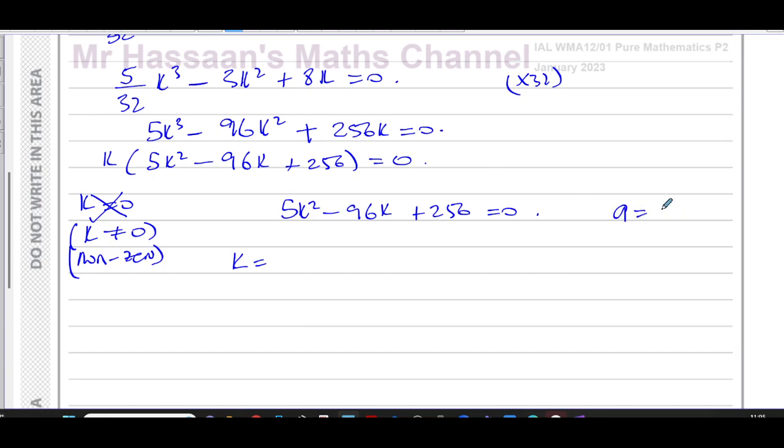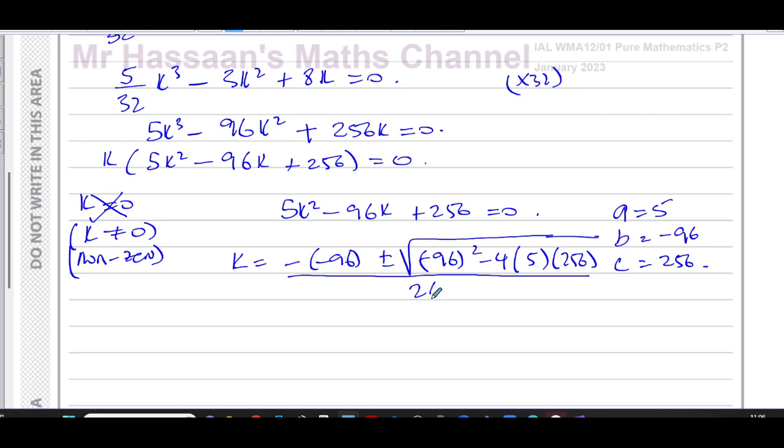So we know that the first term here, a, the one associated with the k squared is 5, and the b, which is associated with the k term, which isn't squared, is minus 96, and the constant is 256. So let's put this in our quadratic formula, minus b plus or minus the square root of b squared minus 4ac all over 2a. So minus b, which would be minus minus 96, plus or minus the square root of minus 96 all squared, minus 4 times 5 times 256, all of that over 2 times 5, 2a.